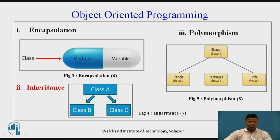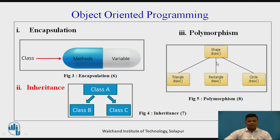Polymorphism: suppose we have to draw a shape. Shapes are of different types — triangle, rectangle, or circle. We can draw different types of shapes like triangle, rectangle, and circle for a particular function called 'draw' under the class 'shape'. This is called polymorphism.